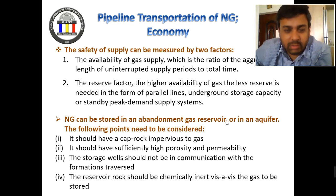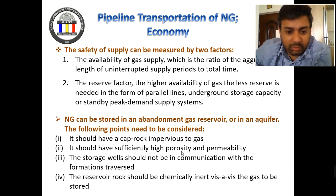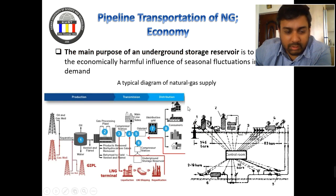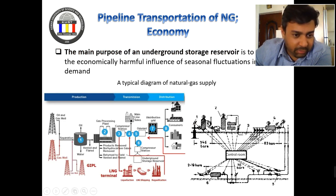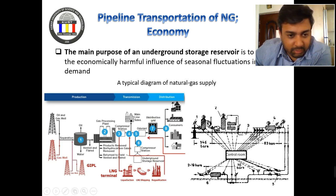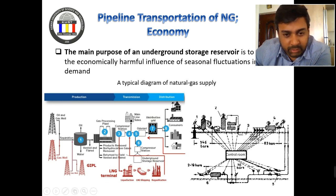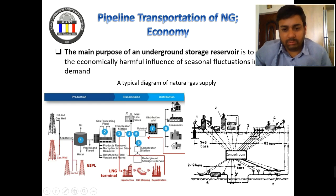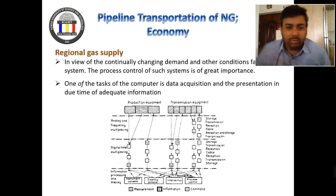Natural gas can be stored in subsurface reservoirs — those reservoirs which are not in communication with the formation. So these are the gas storages. From the oil and gas wells, separation happens in a separator; the gas goes into the gas processing plant, then to the compressor. From the compressor we can send the gas to underground storage, or we can liquefy it, or distribute it to consumers such as power plants. The gas processing plant and gas pipeline transmission both play a very important role.